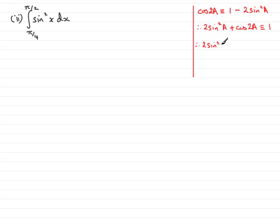If I subtract cos 2a from both sides, we have 2 sin squared a is identical to 1 minus cos 2a, and then by dividing by 2 you end up with sin squared a is identical to 1 minus cos 2a all divided by 2.